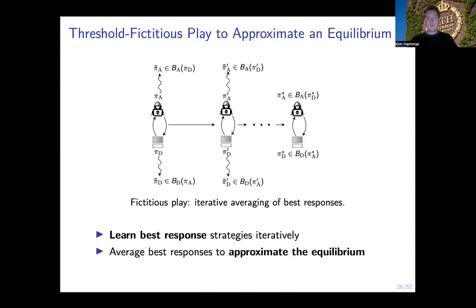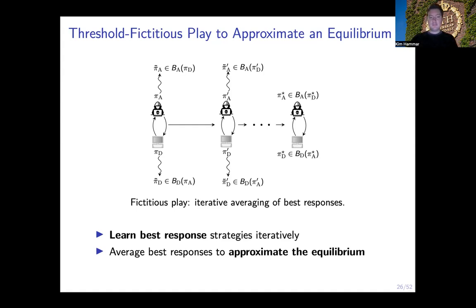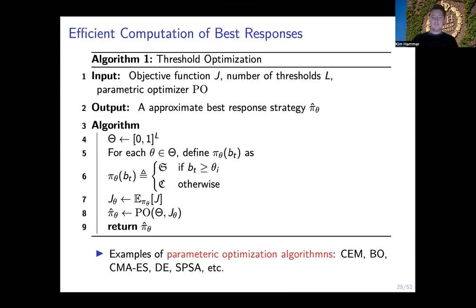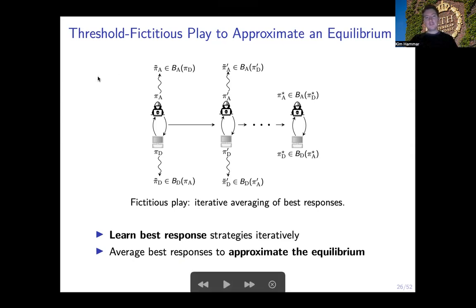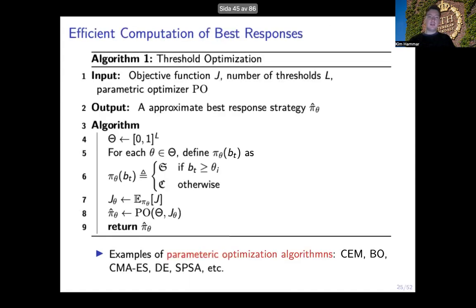Computing this equilibrium is unfortunately intractable, but there exist many algorithms for approximating it that are surprisingly effective in practice. Perhaps the simplest is called fictitious play, where both players repeatedly play games against each other and after each game update their strategies to be a best response against the history of the opponent's play. If they keep doing this long enough they will eventually reach a fixed point where each player plays a best response against the other — that is by definition a Nash equilibrium. The vertical arrows correspond to computation of best responses, which we can do efficiently using algorithm one, and to get the horizontal progression towards the equilibrium we simply iteratively invoke algorithm one — meaning we can approximate an equilibrium using something like 10 lines of code.